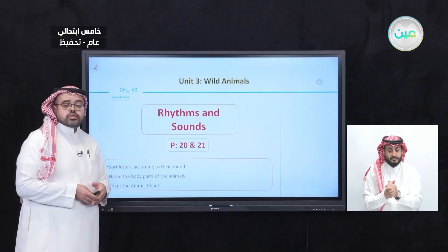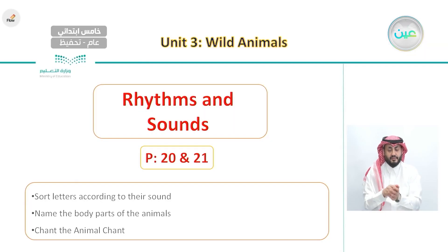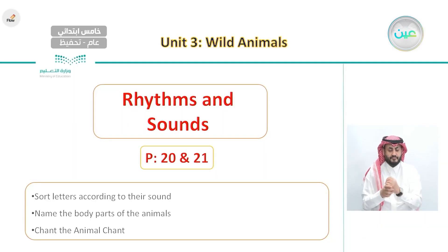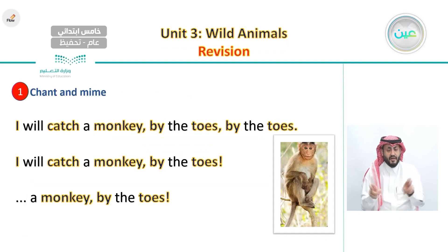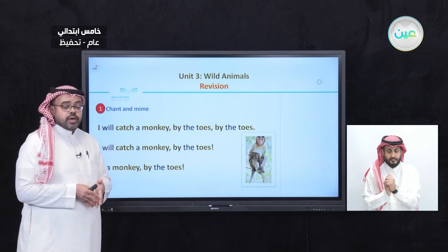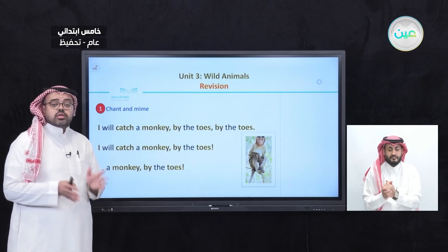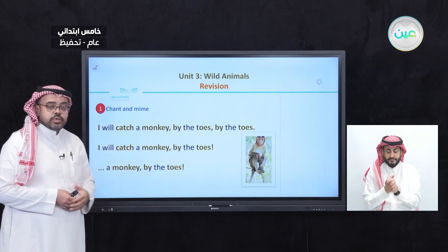After that, we moved on to the next lesson, which is Rhythms and Sound on pages 20 and 21. Our goals were to sort letters according to their sound, to name the body parts of animals, and to chant the animal chant. We listened to a chant about different animals — here is a quick reminder of that chant.